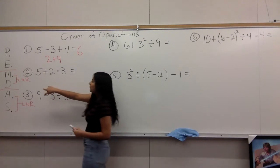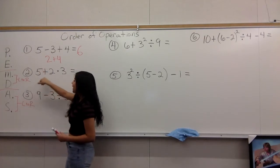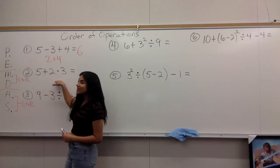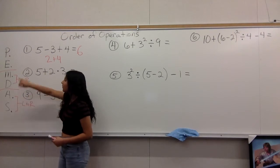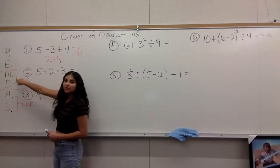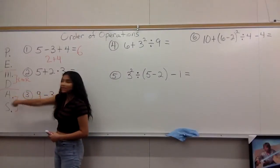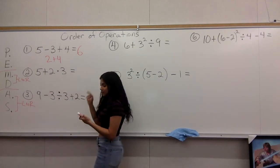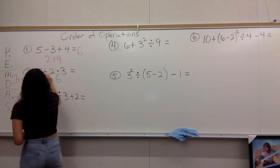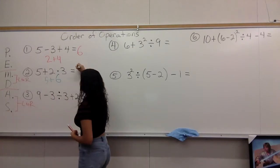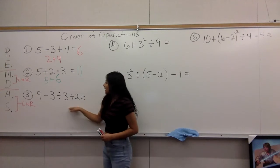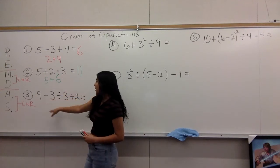Moving on to number two. Going down the list, we see we only have addition and multiplication. Even though I said left to right, that only applies when both operations are addition and subtraction, or both are multiplication and division. Here we have addition and multiplication, and multiplication is always more important than addition. So we do the multiplication first: two times three gives us six, then five plus six gives us eleven. That's our answer for number two.